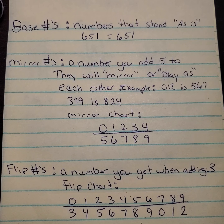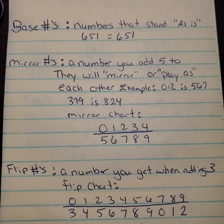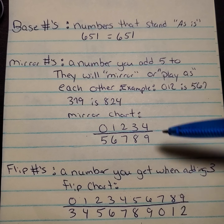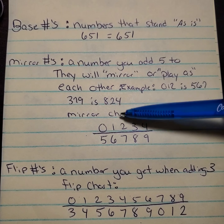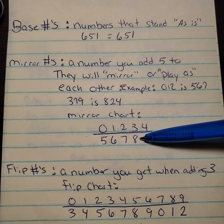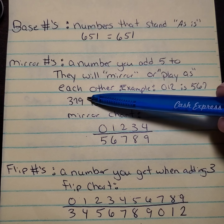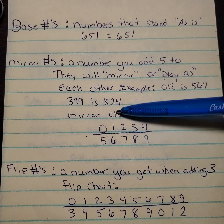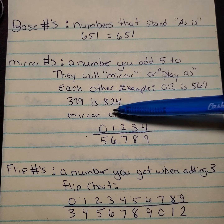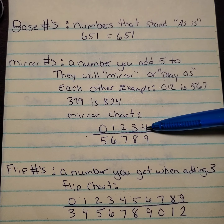A mirror number is a number that you add 5 to. It can be mirrored or played as each other. So if you see 0, 1, 2 and you mirror that, it can be played as 5, 6, 7. Or if you have 3, 7, 9, you can mirror that using this chart: the 3 becomes an 8, the 7 can be played as a 2, and the 9 can be played as a 4.